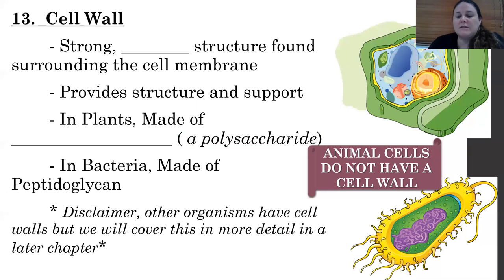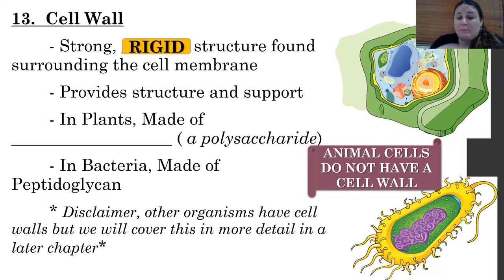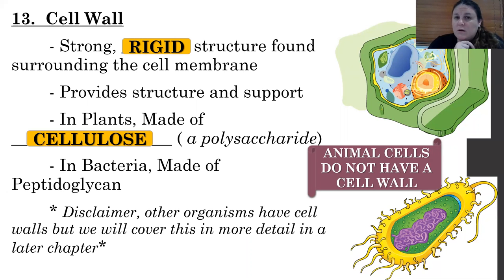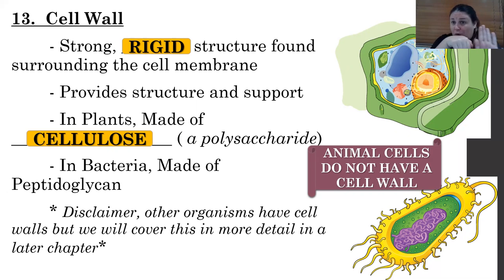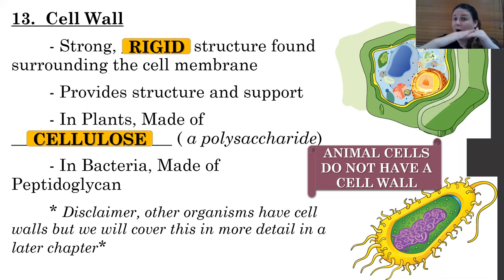The cell wall is a strong rigid structure found surrounding the cell membrane that provides structure and support. In plants it's made out of cellulose, which is a polysaccharide. Cellulose is made out of beta-glucose, and every other beta-glucose has to be upside down in order to form the glycosidic linkage, which means cellulose polysaccharides can hydrogen bond to other cellulose polysaccharides, forming a rigid structure.